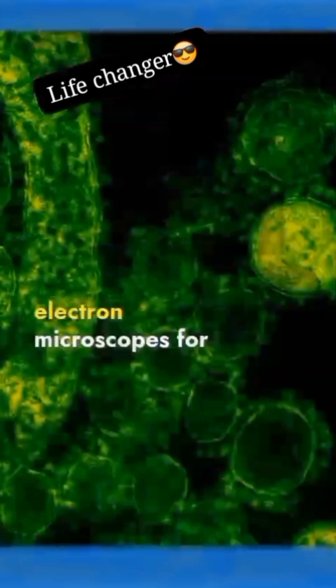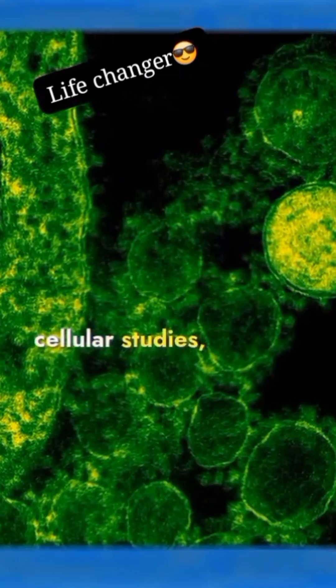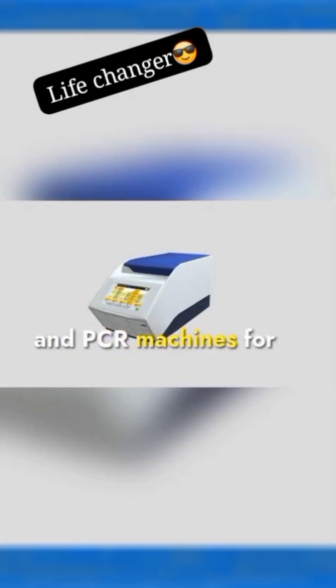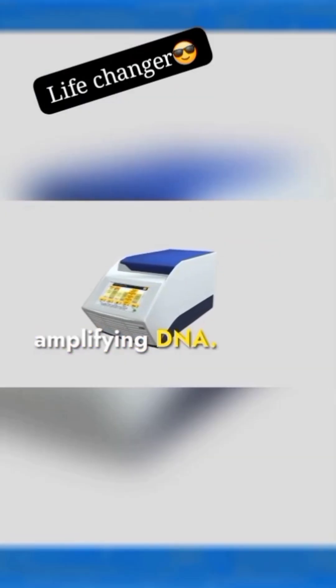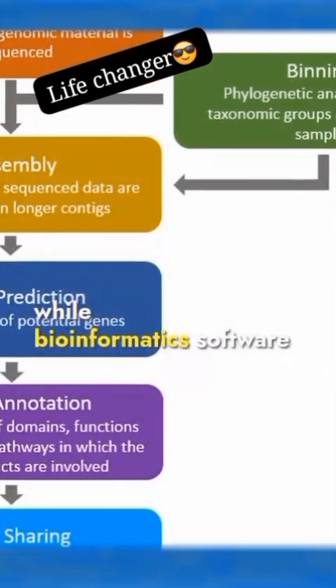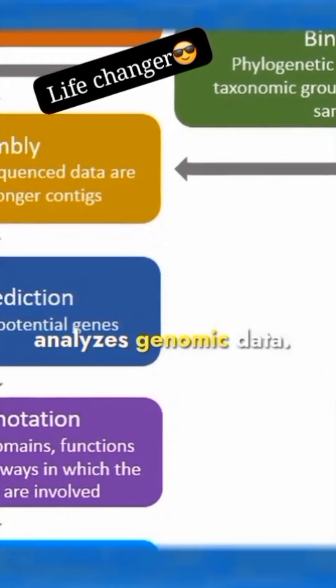Biology employs optical and electron microscopes for cellular studies, DNA sequencers for genetic analysis, and PCR machines for amplifying DNA. CRISPR-Cas9 revolutionizes gene editing, while bioinformatics software analyzes genomic data.